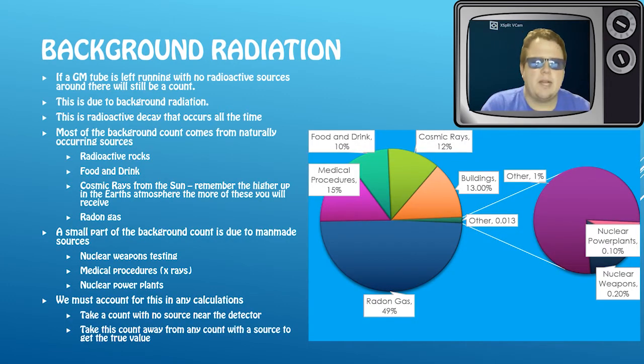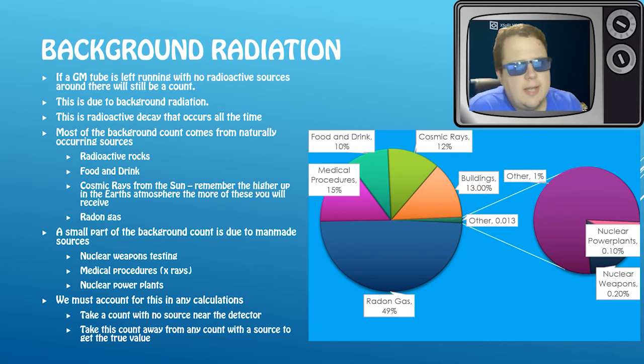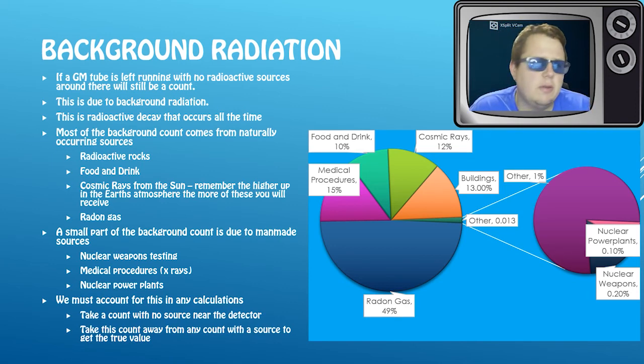Okay, background radiation. Now these numbers here are rough numbers. They're not accurate - that's one word to use - they're not exactly going to be what's on the exam paper. That will change depending on where they get their data from. But basically, if you leave any GM tube running with no radioactive source in the room, you'll still get a count, and this is due to our background radiation.